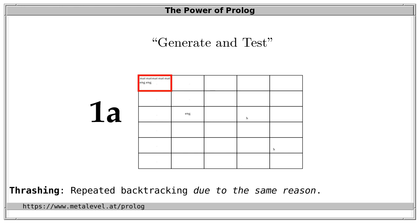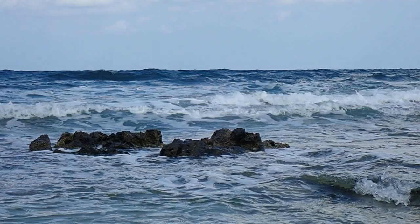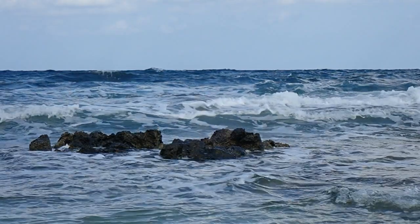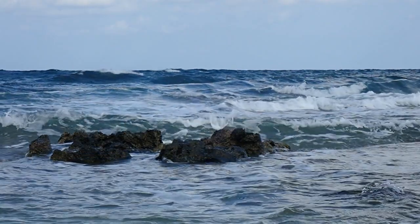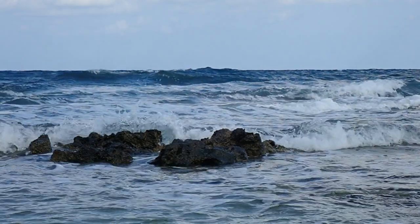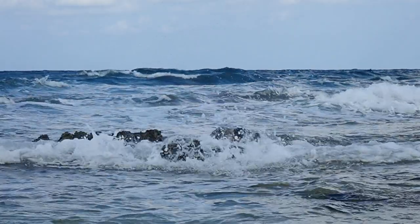When solving your first combinatorial tasks with Prolog, you'll likely encounter thrashing because Prolog makes it easy to write programs with a lot of it. With such a naive search strategy, there's no chance of finding solutions for complex scheduling problems. A key question is: can we avoid or reduce thrashing? The answer is yes, and Prolog makes this easy using Constraint Logic Programming (CLP).